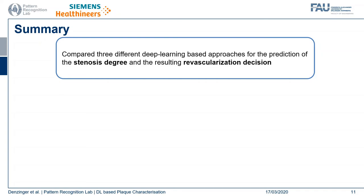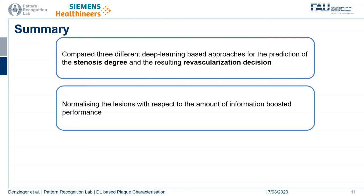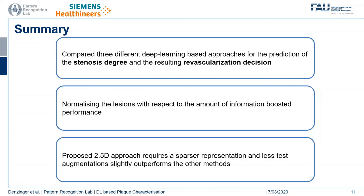Summarizing, we compared and adapted three different deep learning-based algorithms for the task of predicting the lesion-level revascularization decision and the stenosis degree with defined start and end points. We observed that normalizing the lesions with respect to the amount of information provided by each single segment during training boosted the performance of our methods. The 2.5D approach we propose only needs a sparser representation and does not need as many test augmentations as the other methods or the 2D approach.